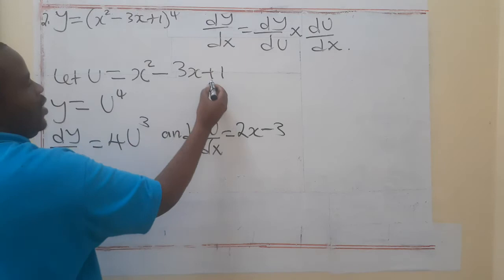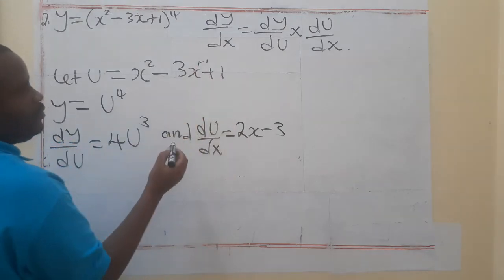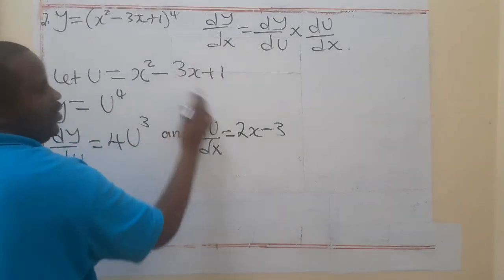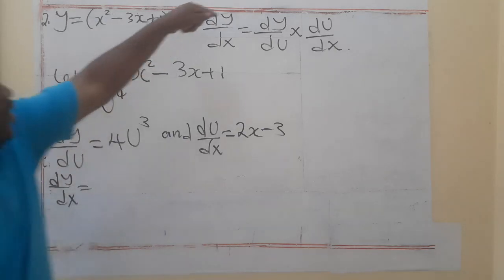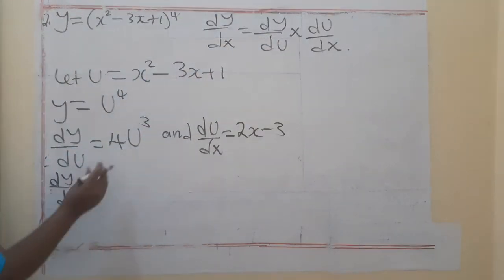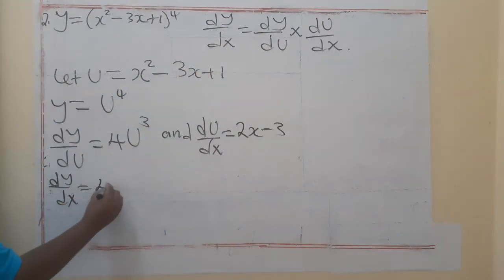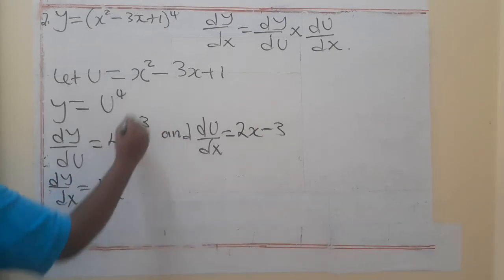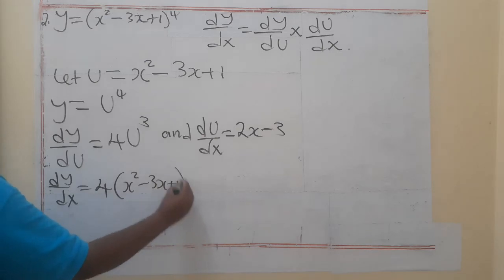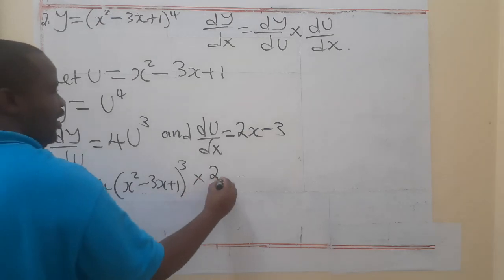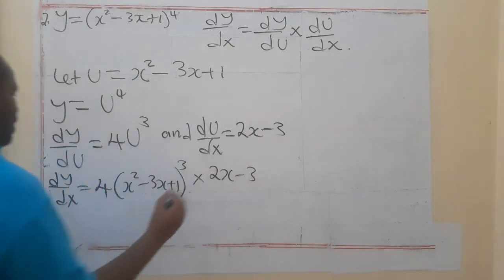Because, when you reduce 1, you will have 2x minus what? 3. Why? Because, here, there is power 1. So, we say, 1 minus 1, that would be 0. x to the power 0 would be 1. 1 by 3, you have to get that.